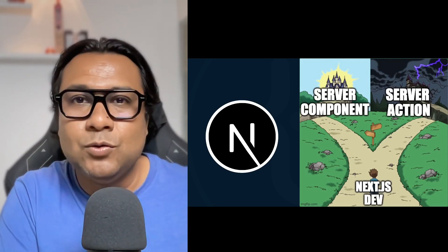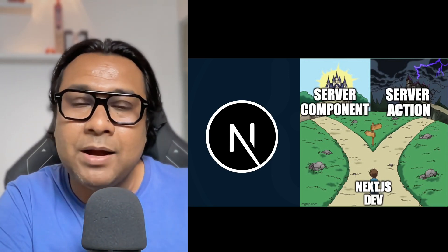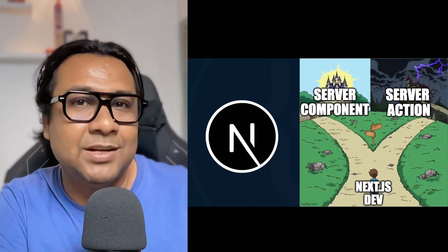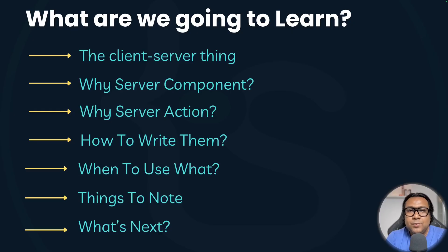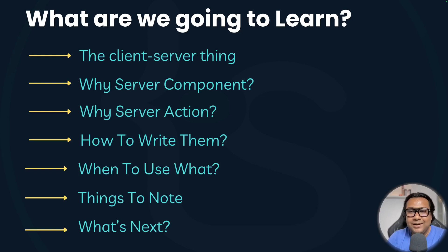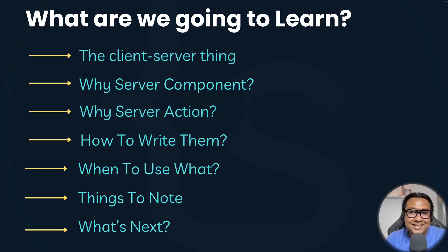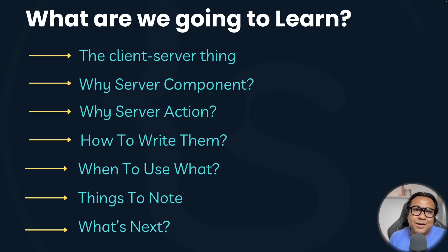So I thought let's clarify that over a video, explaining with some examples about server components and server actions, their usages, and a few things you have to keep in mind while building production-level applications. We are going to learn about the client-server model at a high level, then why server components, why server actions, how to write them, when to use what, and a few important things to know before using them freely in a production-deployed application.